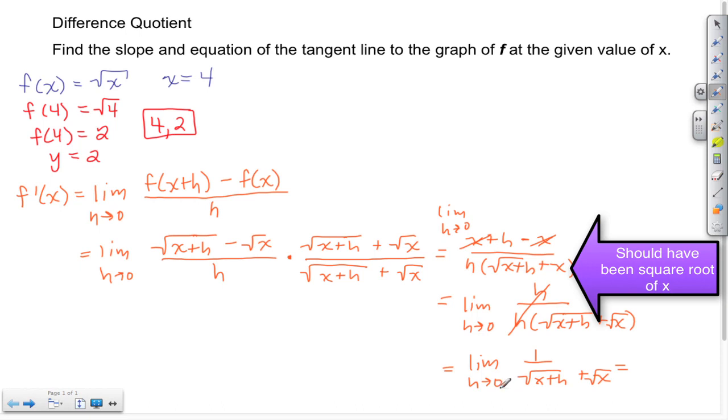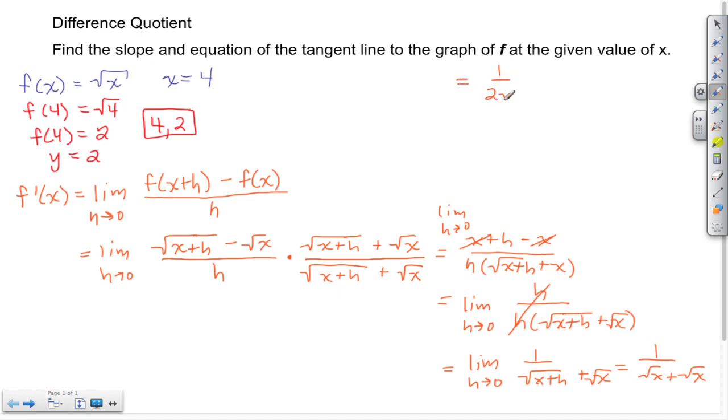Now at this point I can substitute in the value of 0 for the h's. So here I have 1 over square root x plus the square root x because that h goes away at 0. And I'm left with 1 over 2 root x. All right, so this here is what f prime of x is equal to.